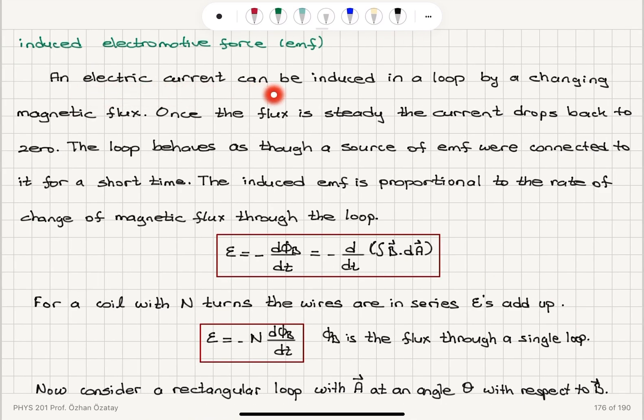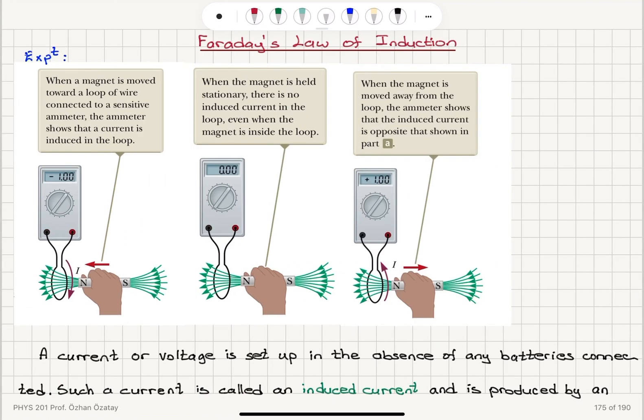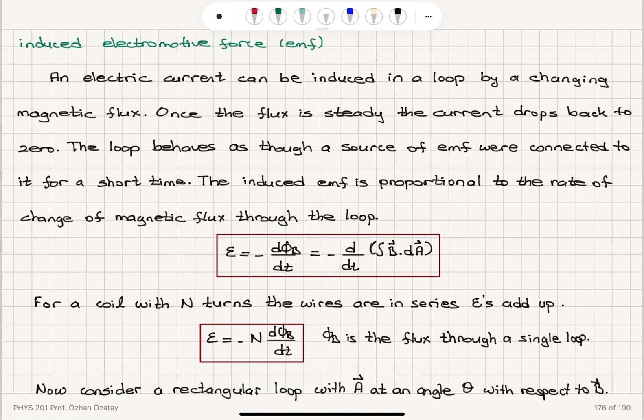An electric current can be induced in a loop by a changing magnetic flux. As you see here, only if we move the magnet to the loop or away from the loop, there is a current. If it is stationary, then there is no current. Once the flux is steady, the current drops back to zero.